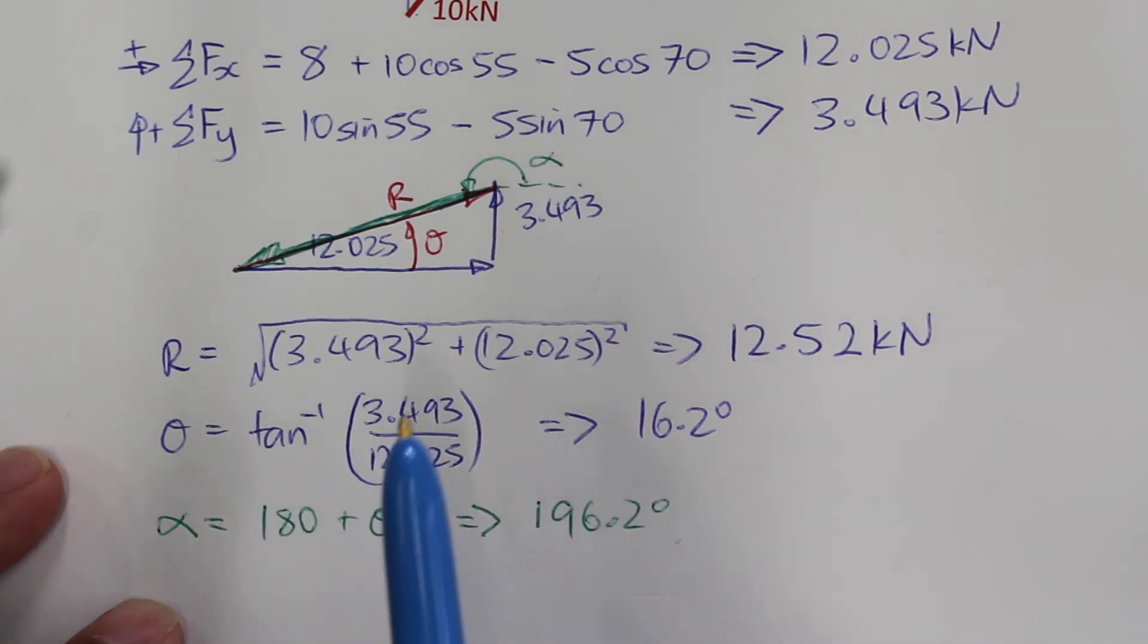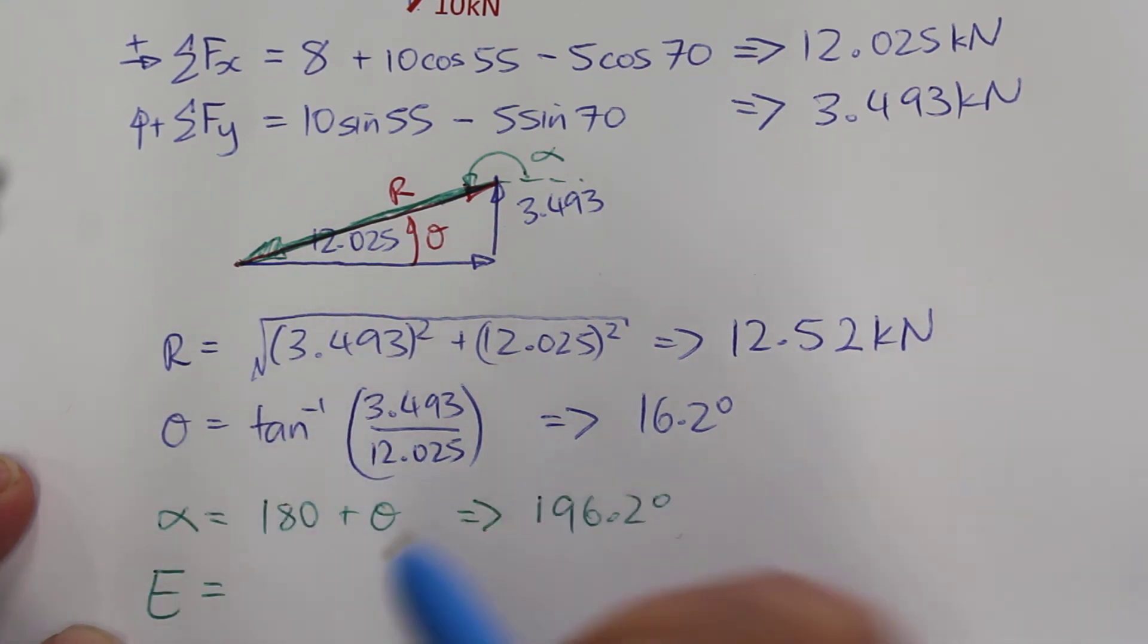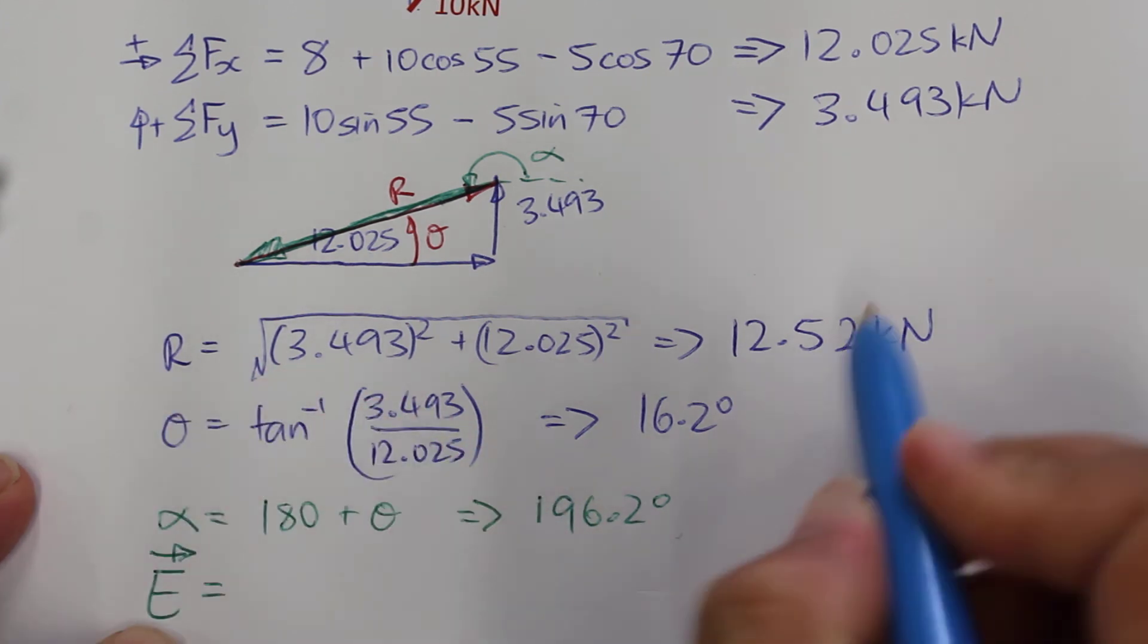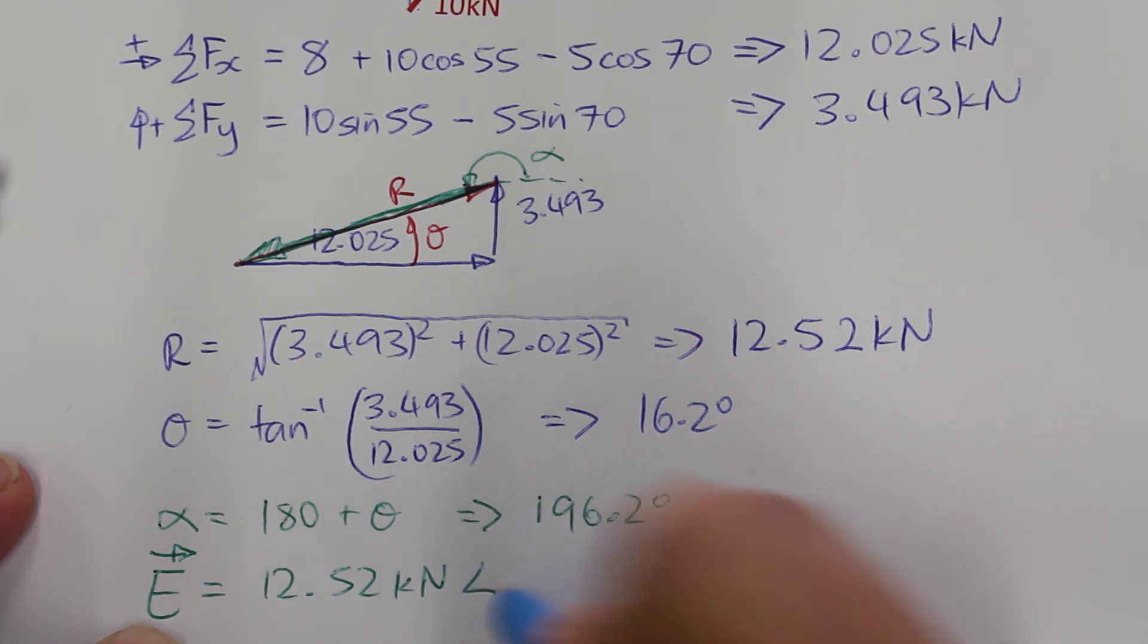I can now write the vector for the equilibrium in polar notation. So E has a magnitude of 12.52 kN at an angle of 196.2 degrees.